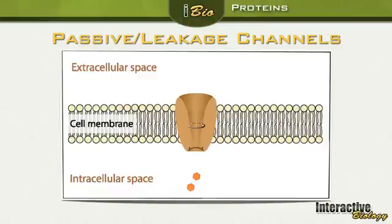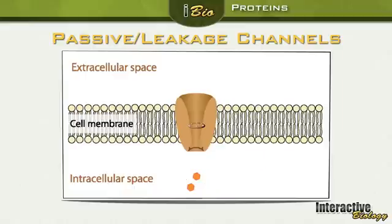Here we're looking at the cell membrane and we can see a leakage channel — in this case, the channel for sodium. Here I have sodium ions inside the cell that want to get outside the cell. How this happens is quite simple: the sodium ions just pass across that channel to get from inside the cell to outside the cell.